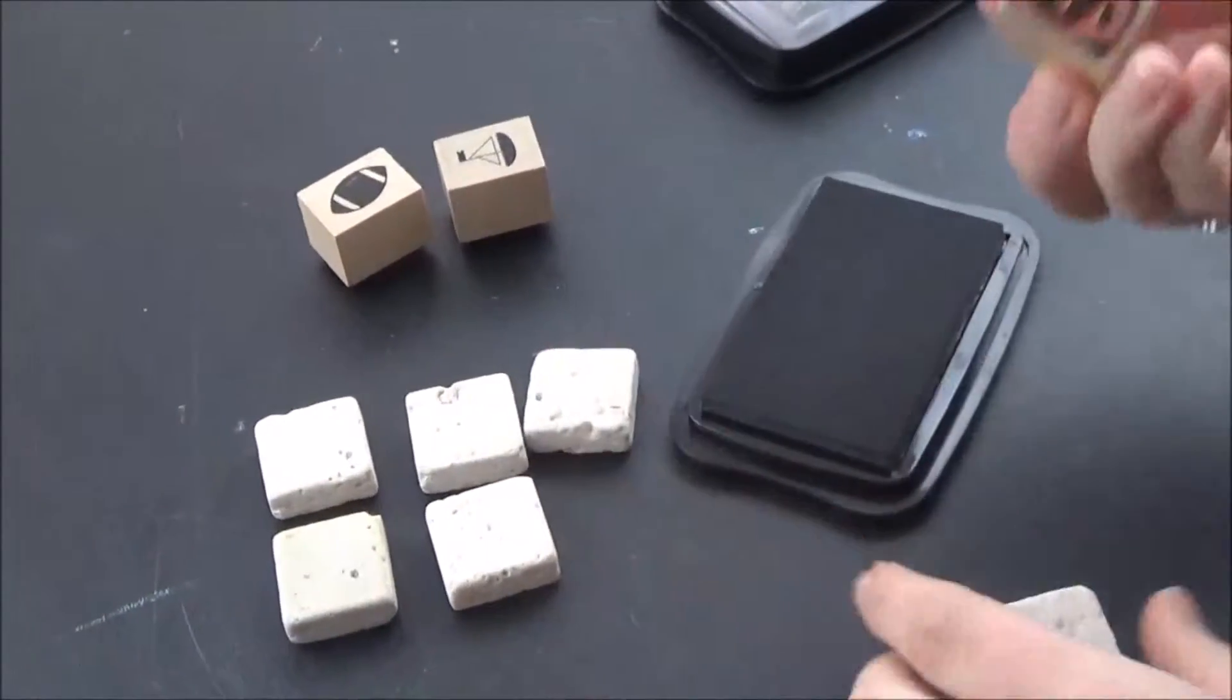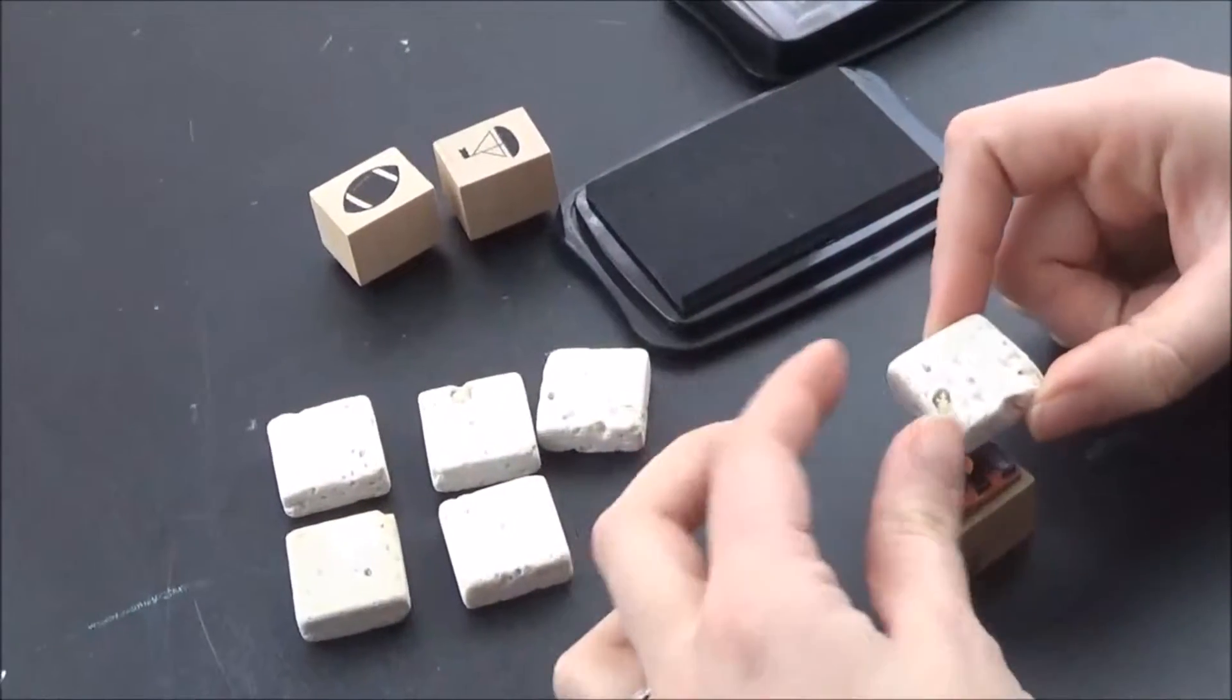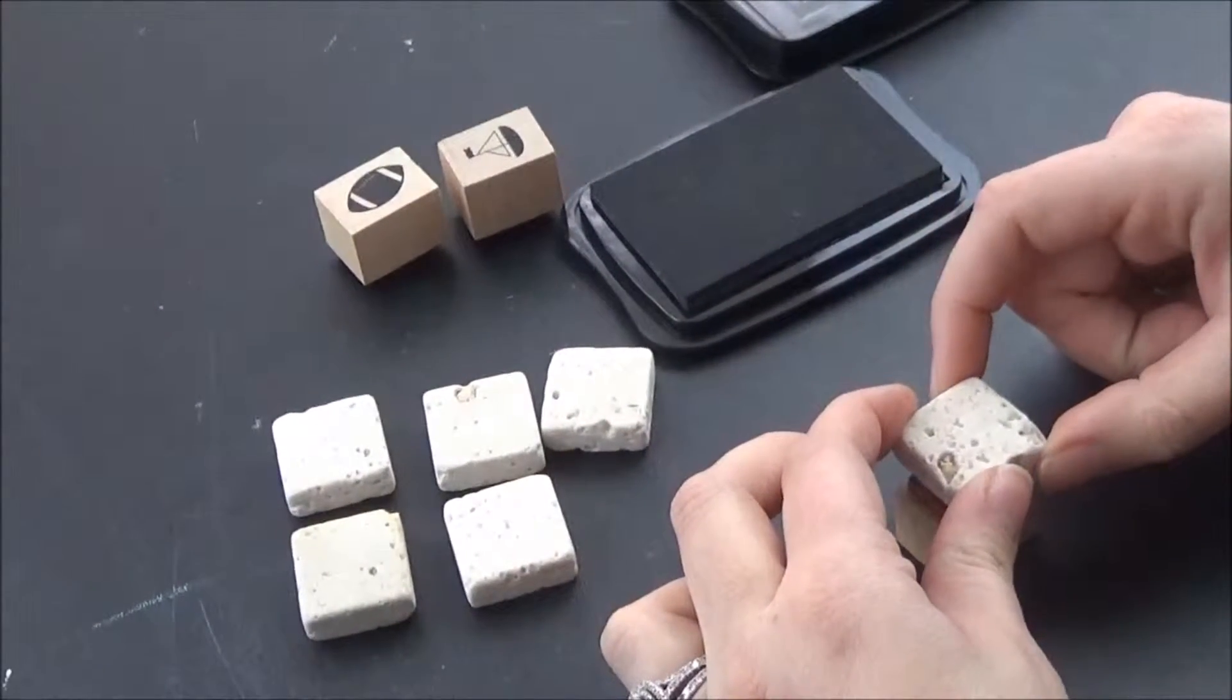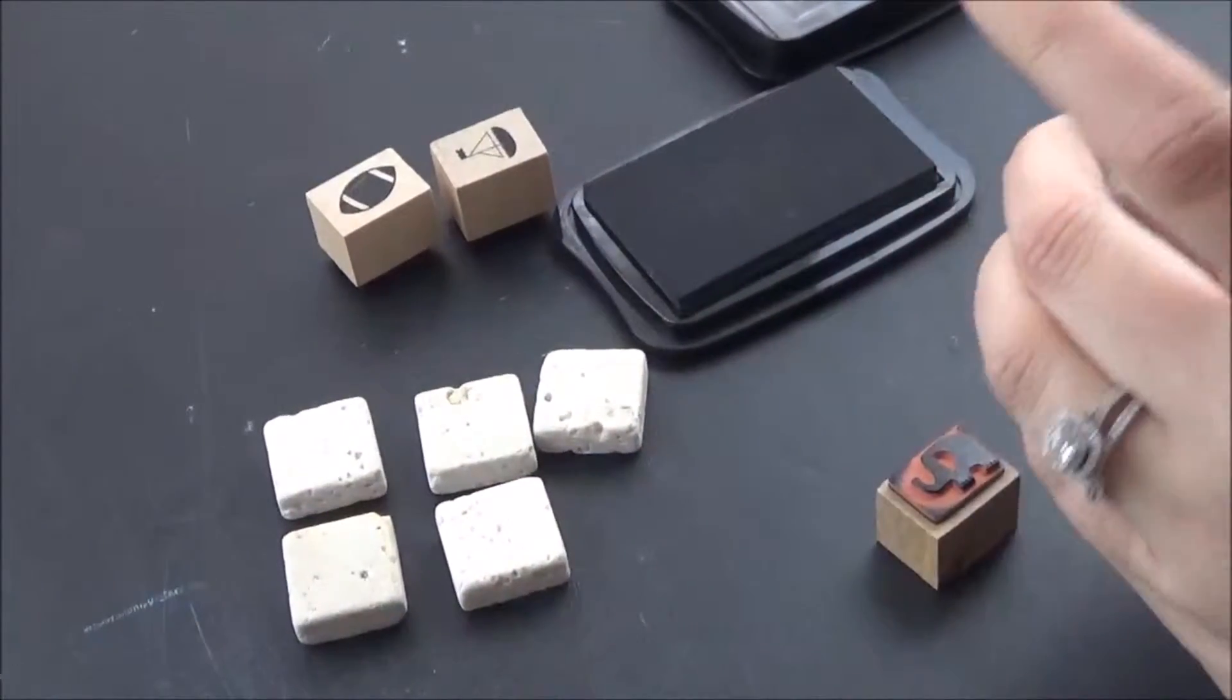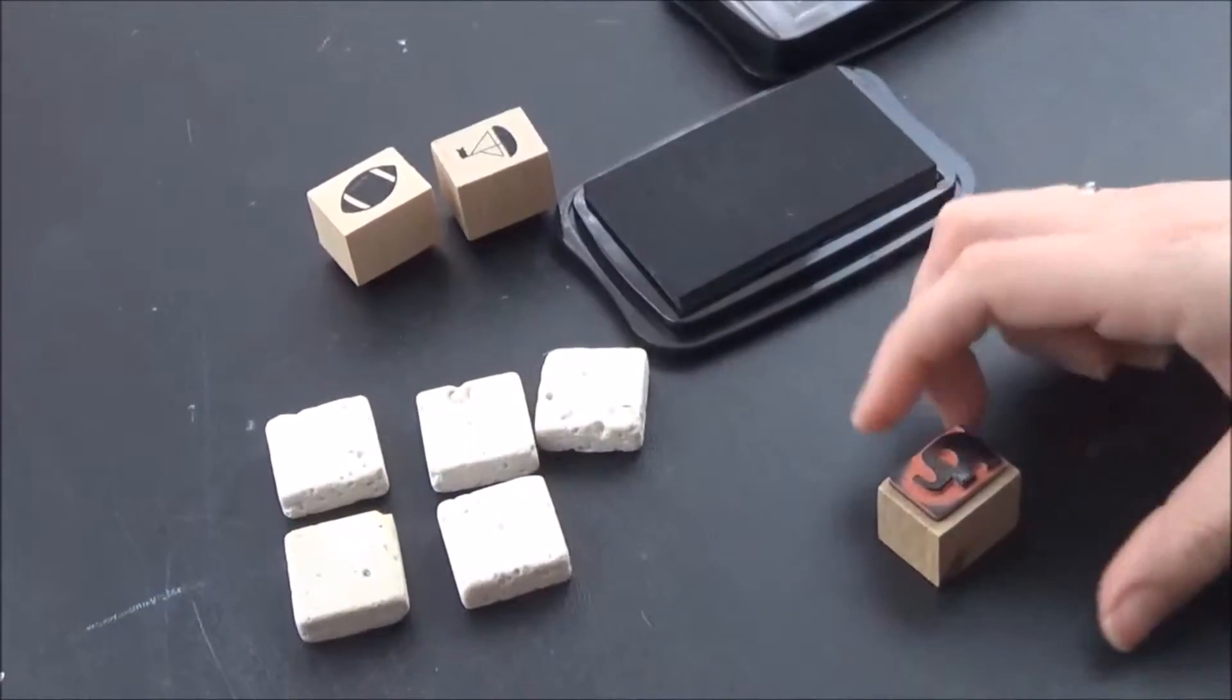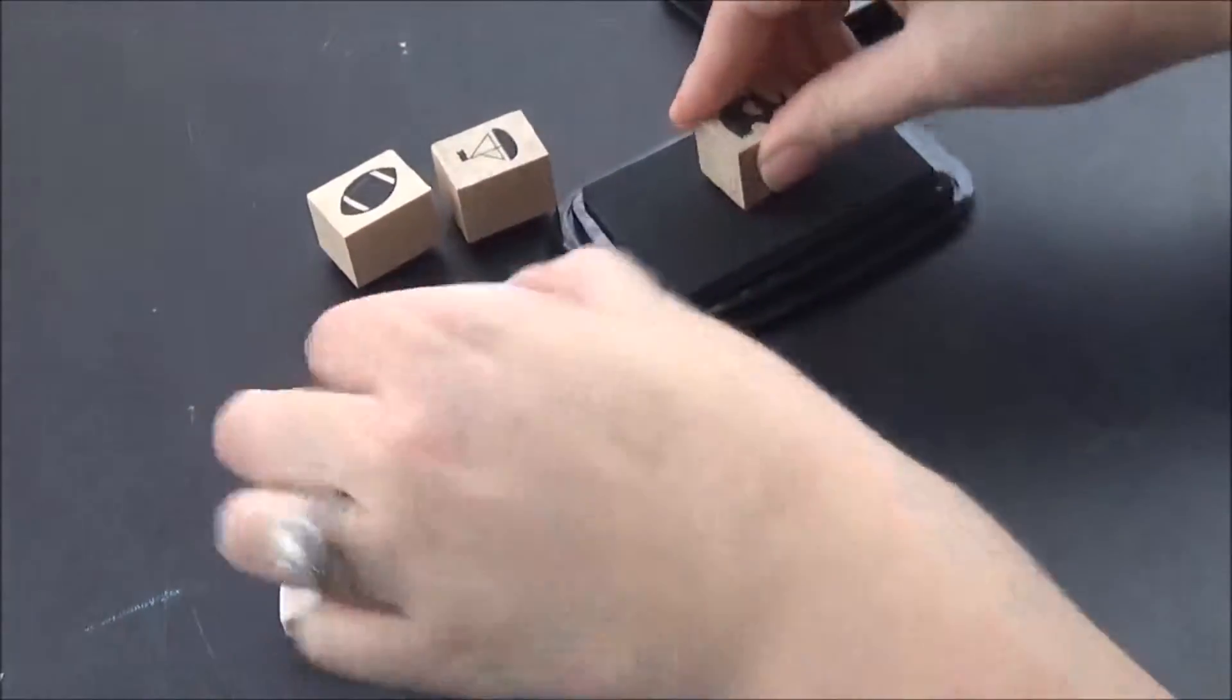These little stamps usually come in about a 15 pack from Michaels. I like to put the stamp wood block down and put the tile on top of the stamp part that has the ink, just to make sure it's going to be in the center of my tile.